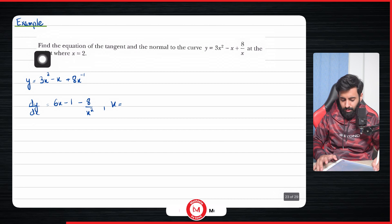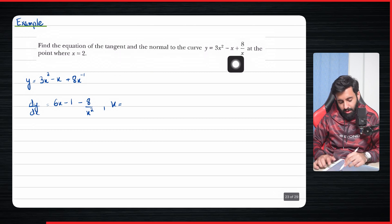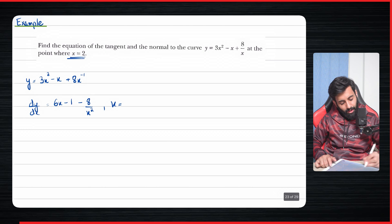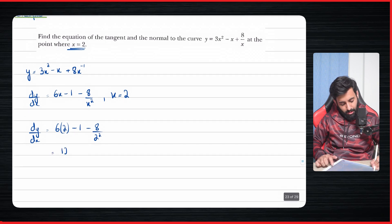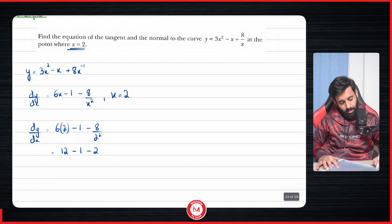The question asks: find the equation of the tangent and normal to the curve y = 3x² − 1 + 8/x at the point where x = 2. Notice you're only given the x-coordinate. Plugging x = 2 into dy/dx: 6(2) − 1 − 8/2² = 12 − 1 − 8/4 = 12 − 1 − 2.